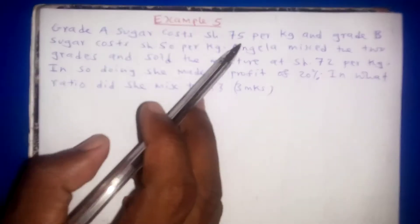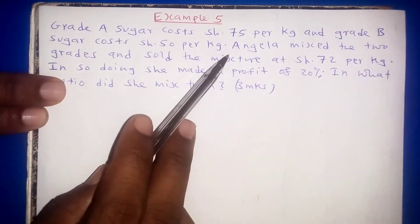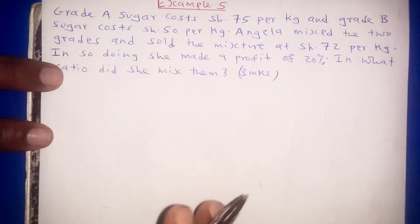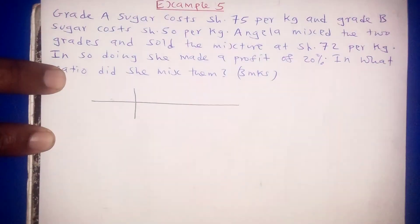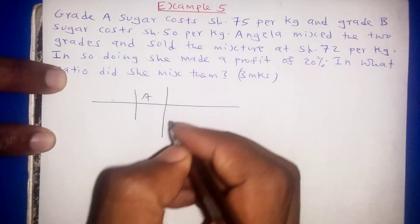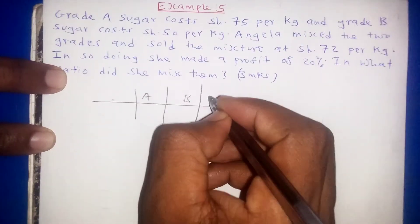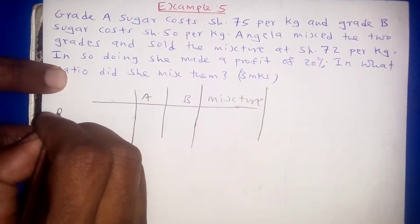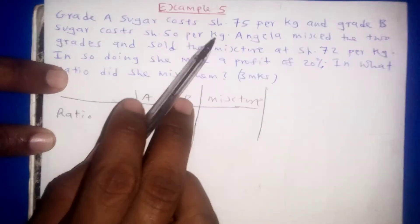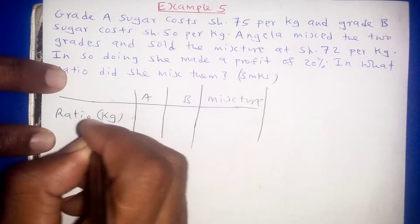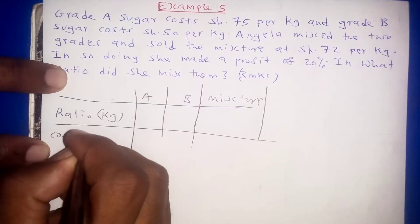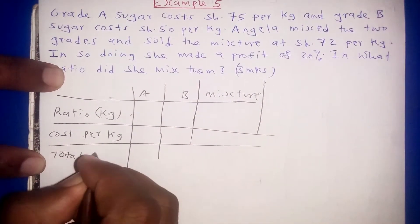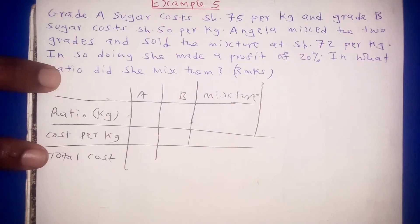Now we look at Example 5: Grade A sugar costs 75 shillings per kg and Grade B sugar costs 50 shillings per kg. They mix the two grades and sell the mixture at 72 shillings per kg. We set up our table with Grade A, Grade B, and the blend, with ratio, cost per kg, and total cost rows.